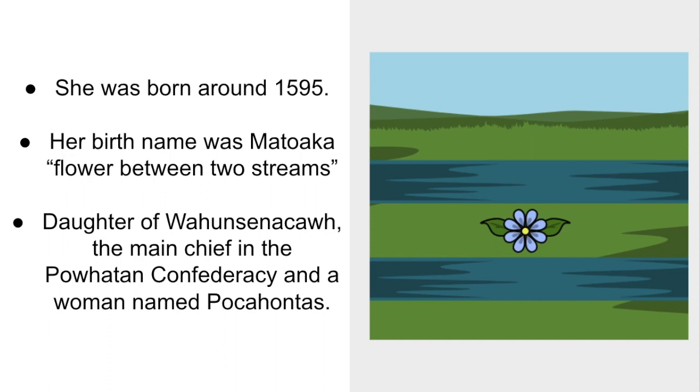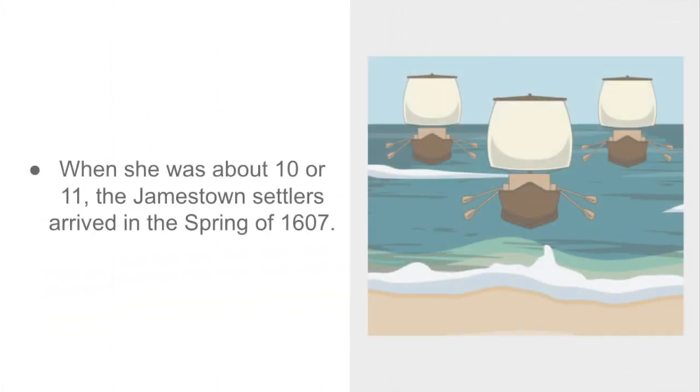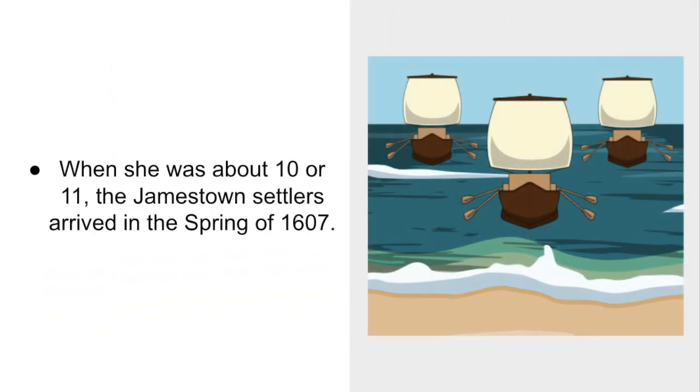Pocahontas' mother died while giving birth to her. When she was about 10 or 11, the Jamestown settlers arrived in the spring of 1607.